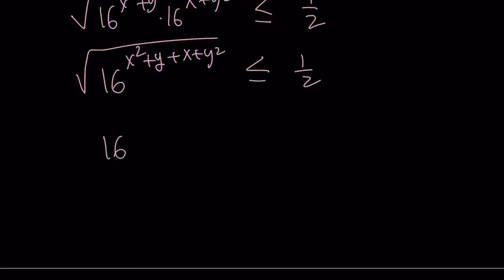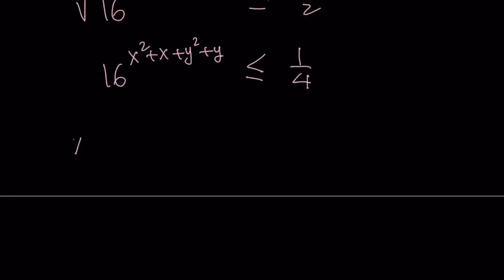And then I'll square both sides. If you do square both sides, you're going to get 16 to the power of x squared. And I'm going to write the x squared with x because they're good friends. And then plus y squared plus y. And now when I square both sides, I'm going to get 1 fourth on the right-hand side. This is still not very good, right? I mean, I can do log on both sides. Yeah, absolutely. You can definitely do that. But I want to make the exponent a little nicer. So here's what I can do. I'm going to work with x squared plus x plus y squared plus y. And guess what? I'm going to complete the square.